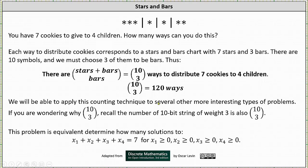This cookie problem is also equivalent to the number of solutions to the equation x1 plus x2 plus x3 plus x4 equals 7 for x1, x2, x3, x4 all greater than or equal to zero. And this should make sense. Notice x1, x2, x3, x4 would be the four children, and the sum is 7 because we have seven cookies.